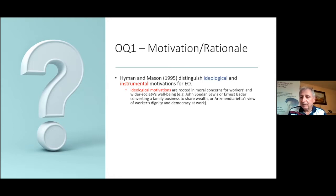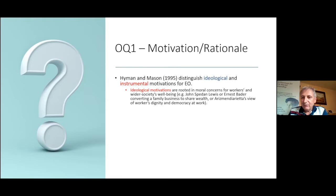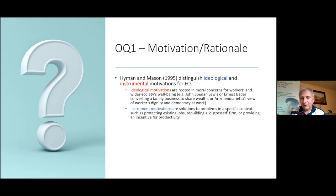Starting with the first question — motivation — Hyman and Mason distinguished between ideological and instrumental motivations. The ideological ones are probably easiest to recognize. There's the oft-retold story of John Spedan Lewis falling out with his father because his father paid the family more than they paid the entire workforce from one year of trading. Similarly, Ernest Bader converted a family business because he wanted to deal with social injustice. In Mondragón, Arizmendiarrieta's view was about workers' dignity and democracy at work.